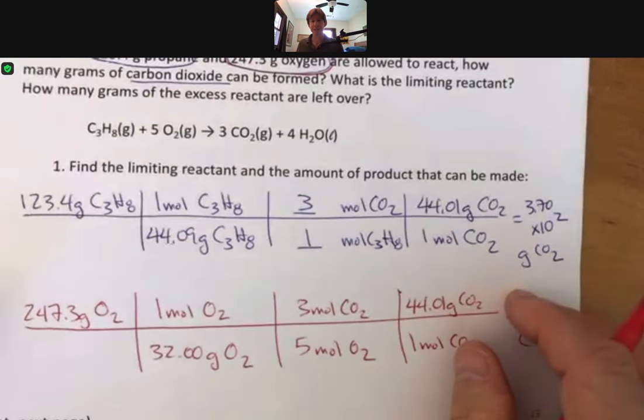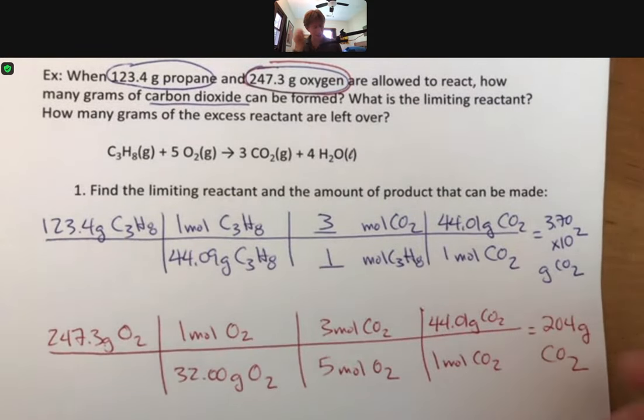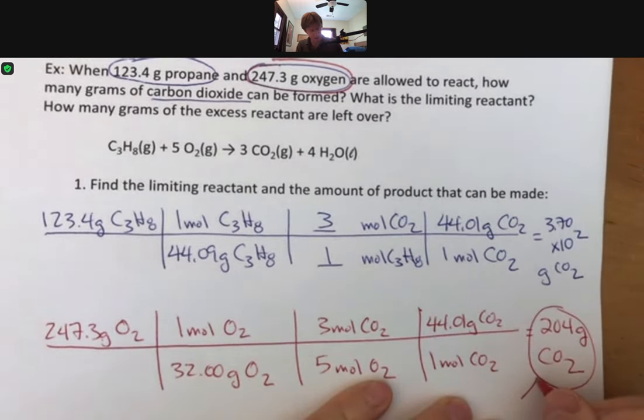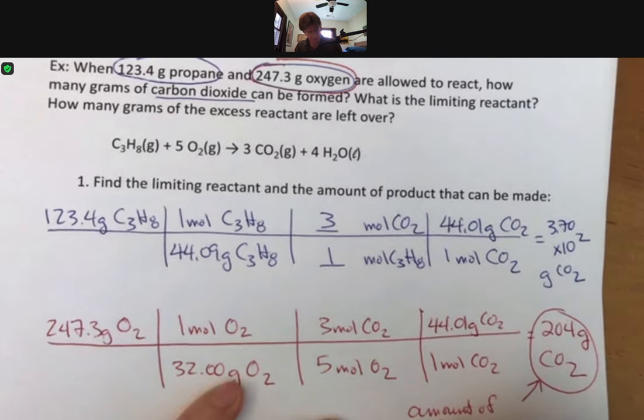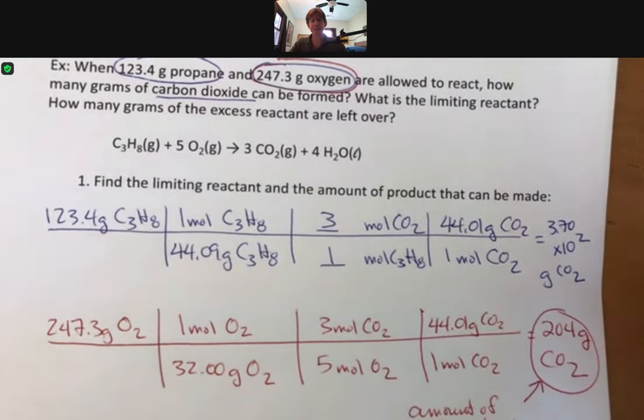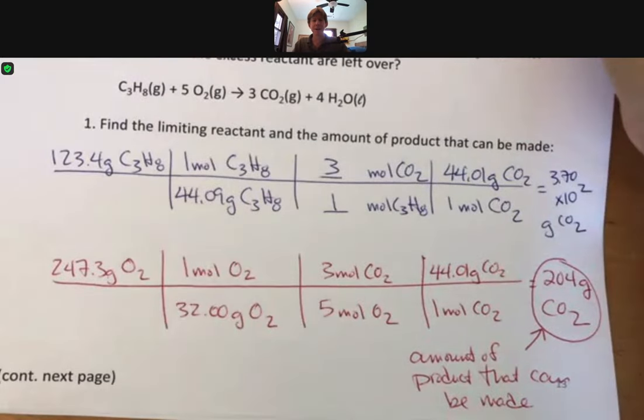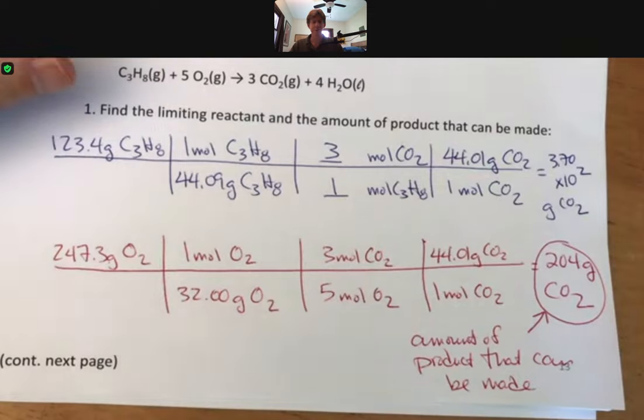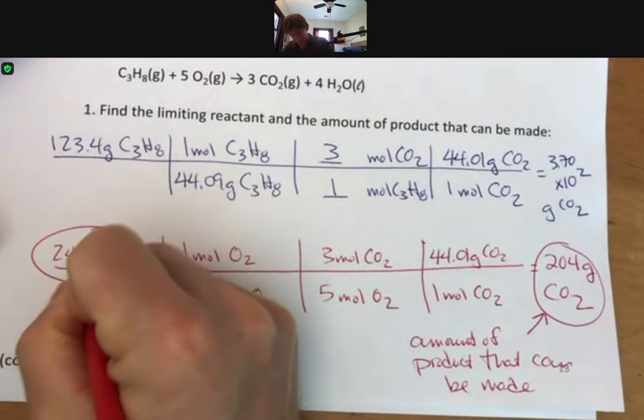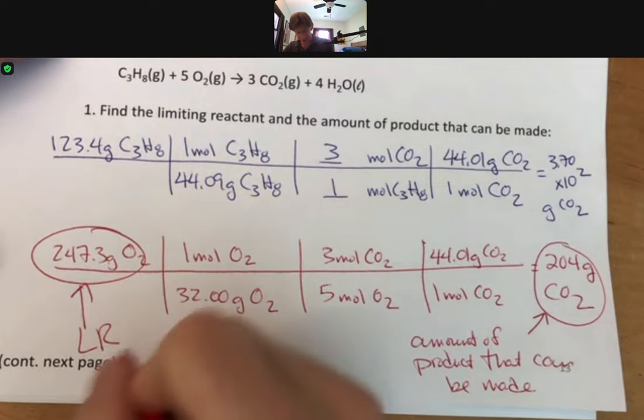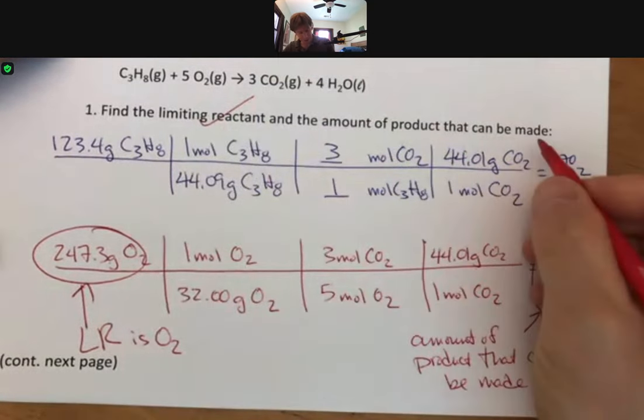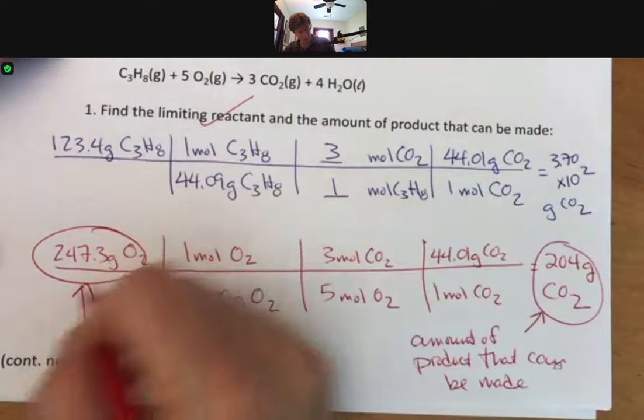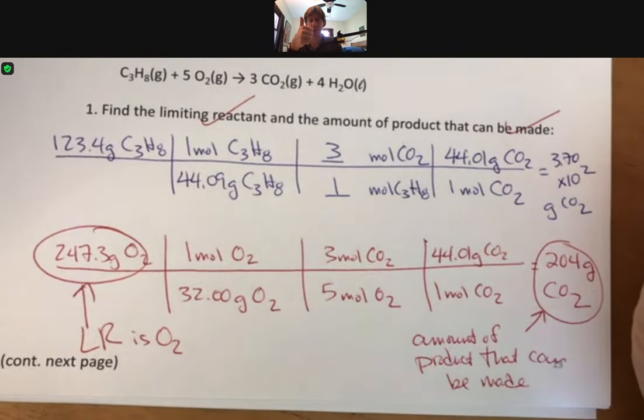Multiplying across, we get 247.3 divided by 32 times 3 divided by 5 and times 44.01. So 204 to 3 sig figs. And we haven't answered the question yet. The amount of product that can be made is right here, 204 grams of carbon dioxide, and that's because it's the smaller amount. Limiting reactant is oxygen. We have answered all the questions on this page.